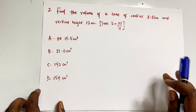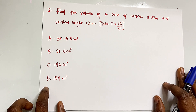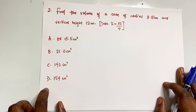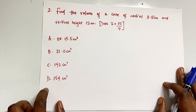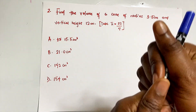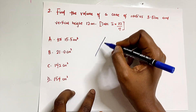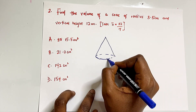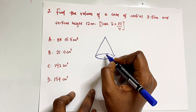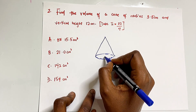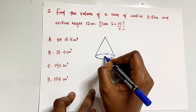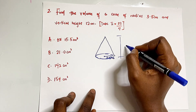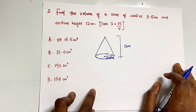Question number two says: find the volume of a cone of radius 3.5 centimeters and vertical height 12 centimeters. Let's sketch out the cone — it has a circular base and comes to a point at the top. The base radius is 3.5 centimeters, the height is 12 centimeters, and we are told to take π as 22/7.